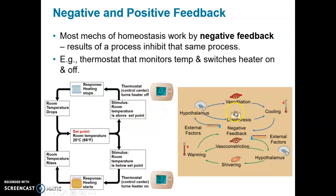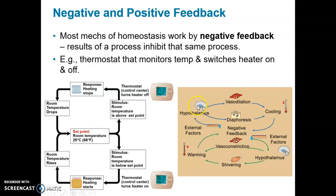In our body we have a thermostat in our brain — the hypothalamus — that detects and monitors our temperature. If body temperature increases due to exercise, the hypothalamus detects that and initiates responses: vasodilation, which increases blood flow in the capillaries of the skin so you radiate heat away. Someone who's been exercising vigorously feels warm because they're radiating heat through their skin.